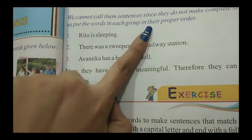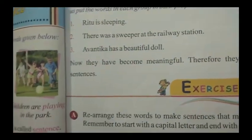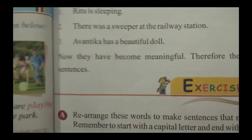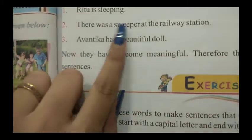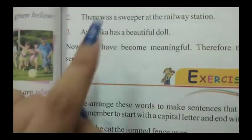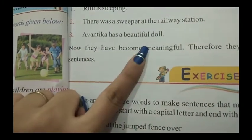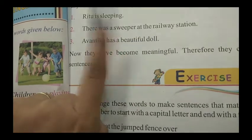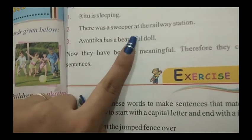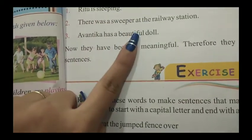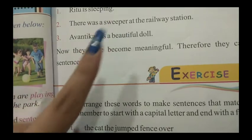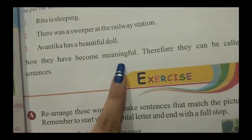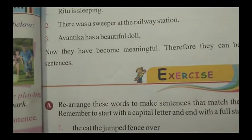Let us put the words in each group in their proper order. Now we will write those three sentences correctly: 'Ritu is sleeping.' 'There was a sweeper at the railway station.' 'Avantika has a beautiful doll.' Now the words are properly placed and the sentences make complete sense — they are meaningful and can be called sentences.